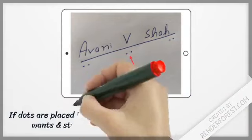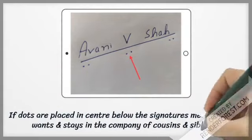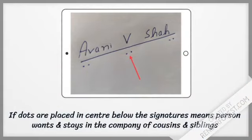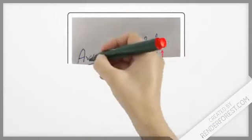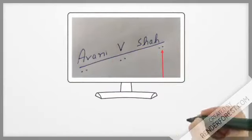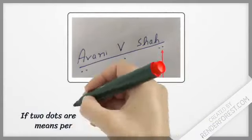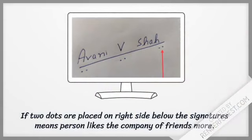If two dots are placed on the right side below the signature, it means the person wants and stays in the company of cousins and siblings. If four dots are placed on the right side below the signature, it means this person likes the company of friends.